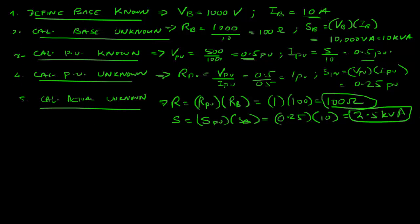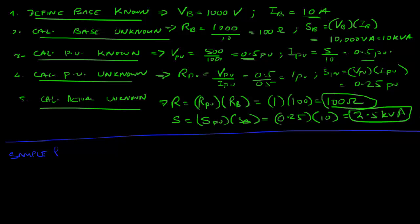Now I'll leave you with a sample problem as I always do. Consider a circuit with an impedance Z — the value of Z is what you need to find. The current I is also unknown.